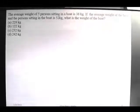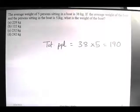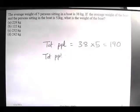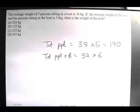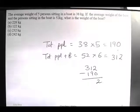Next problem: the average weight of 5 people sitting in a boat is 38 kg. So the total weight of all the people is 38 × 5 = 190. The average weight of the people plus the boat is 52. So the total weight of people plus boat is 52 × 6 = 312, because 5 people plus 1 boat gives 6 items. Subtracting the people's weight: 312 − 190 = 122 kg, which is the weight of the boat.